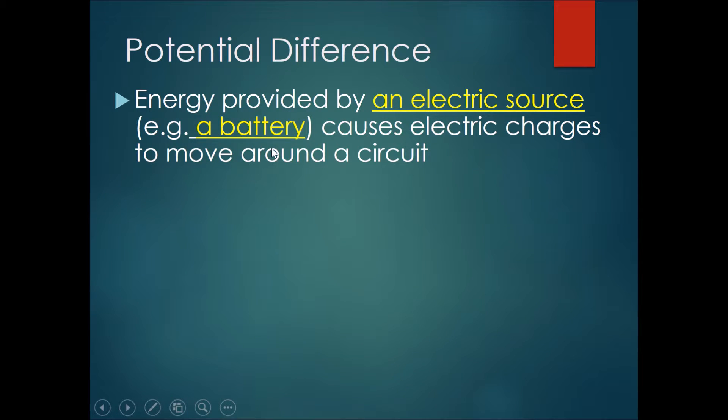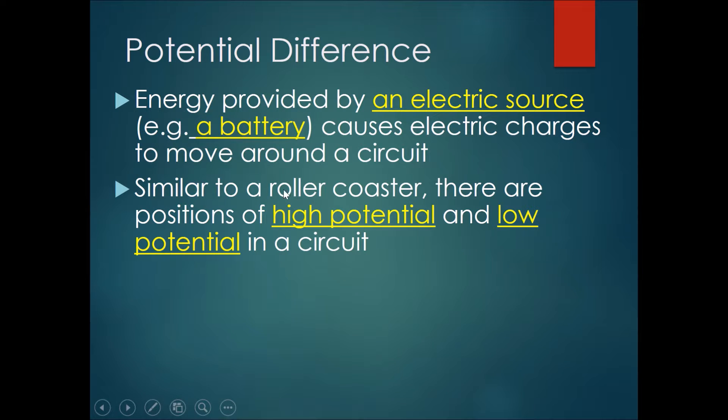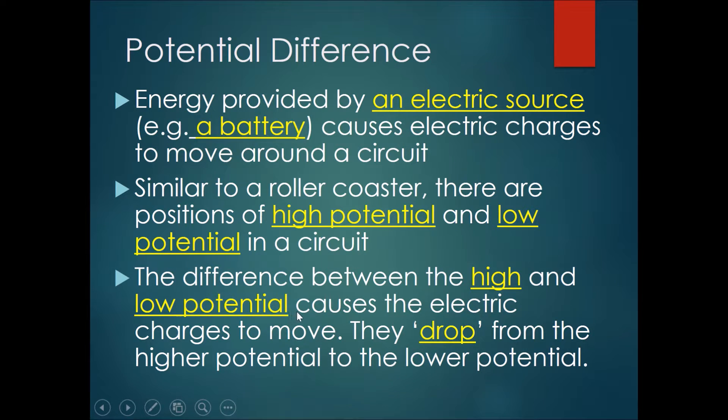Energy provided by an electric source like a battery causes electric charges to move around a circuit. Similar to a roller coaster, there are positions of high potential and low potential in the circuit. And therefore, the difference between the high and the low potential causes the electric charges to move. They drop from the higher potential to the lower potential.